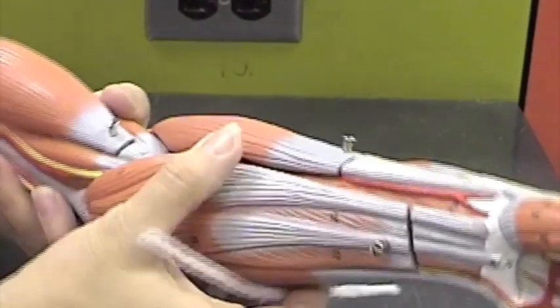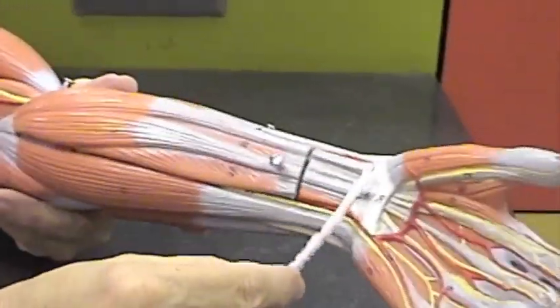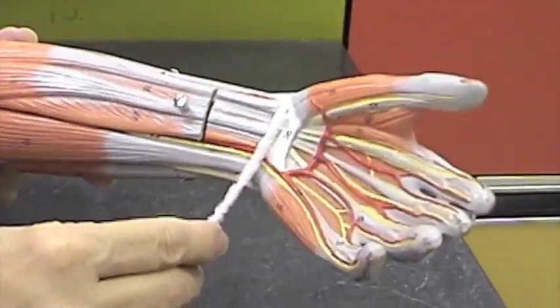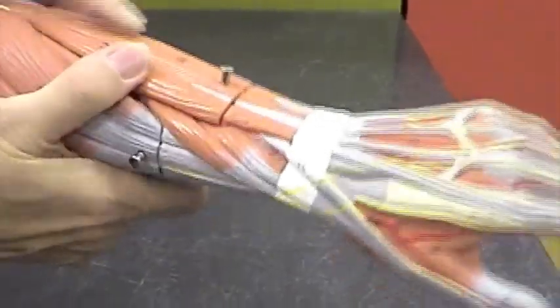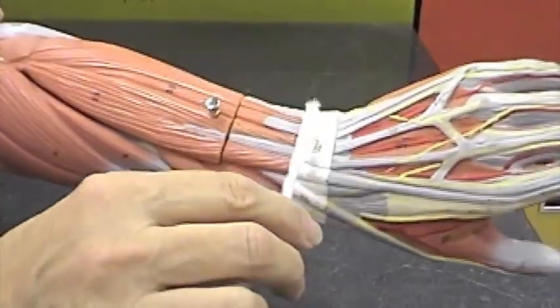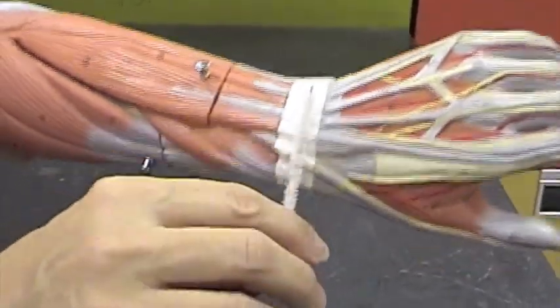Then we have a couple of retinacula. Here we have the flexor retinaculum and that's a connective tissue band. On this side we have the extensor retinaculum.